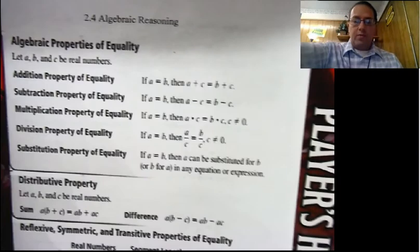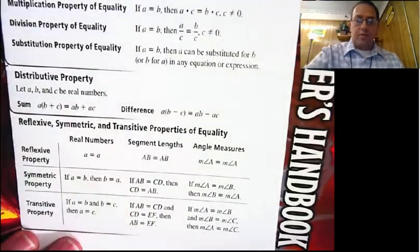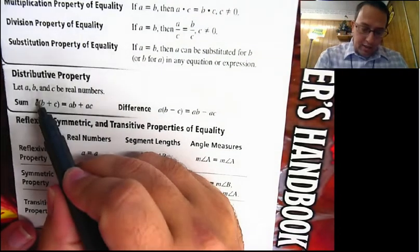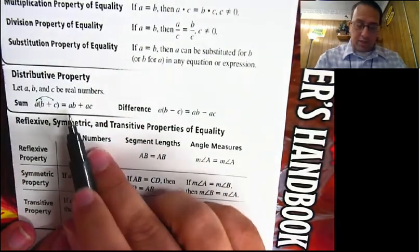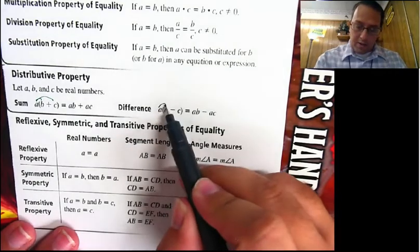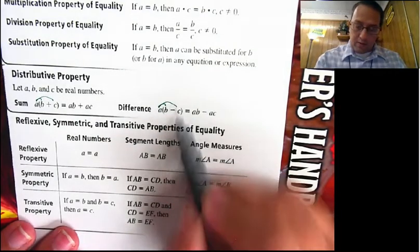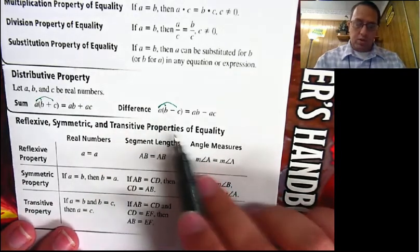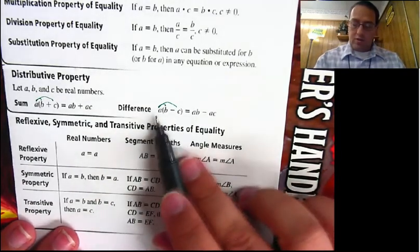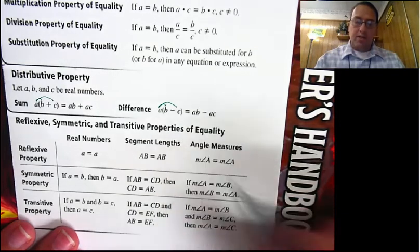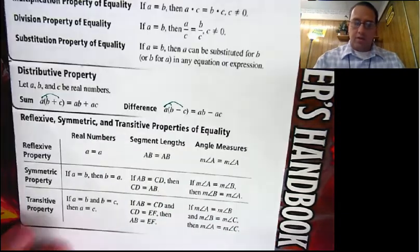Same thing with the distributive property. Everybody remembers the distributive property. I can just take this and distribute it in, and I end up with a times b plus a times c. Been doing that for years. Nothing new.